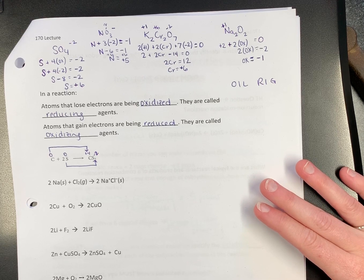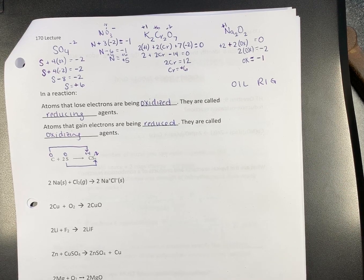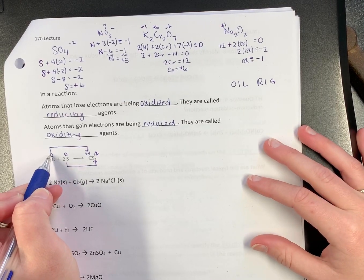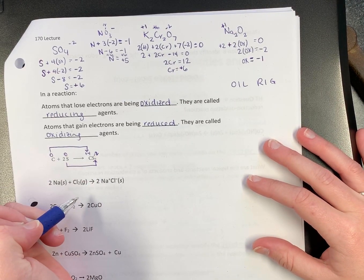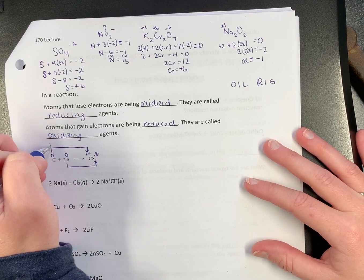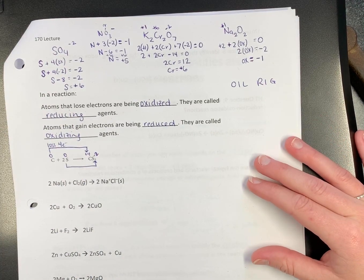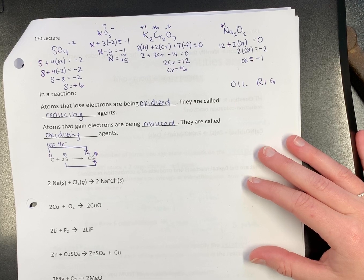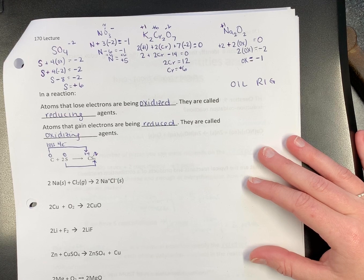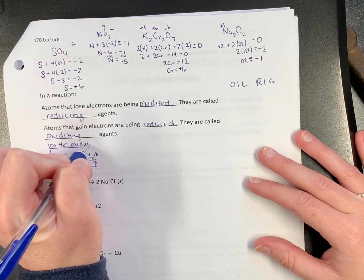I'm only going to work on one of these at a time because otherwise I get confused. So carbon goes from zero to positive four. Did it gain or lose electrons? Lost electrons. So you say loss of four electrons. When you lose electrons, is that oxidation or reduction? Oxidation. Oxidation is loss. Reduction is gain. So oxidation.